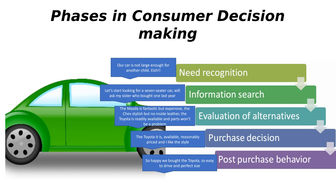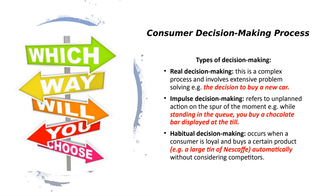Those are the decision-making steps we all follow regardless of what we are purchasing. The last component of our theory is the different types of decision making we have as people. Real decision making is when we are buying something that is quite expensive and requires a lot of information search — buying a car is an example. It's complex, you need to evaluate alternatives, and because it's expensive you put quite a lot of time and effort into it.